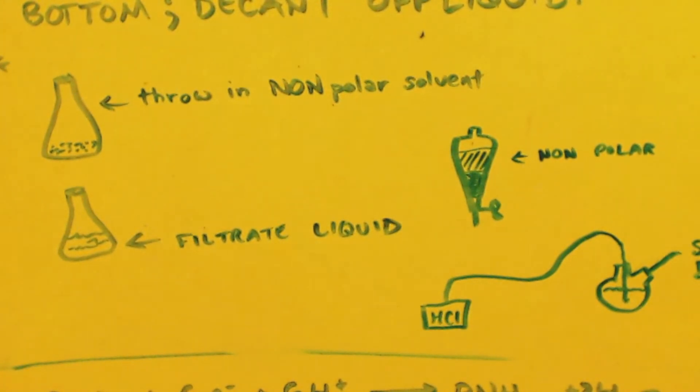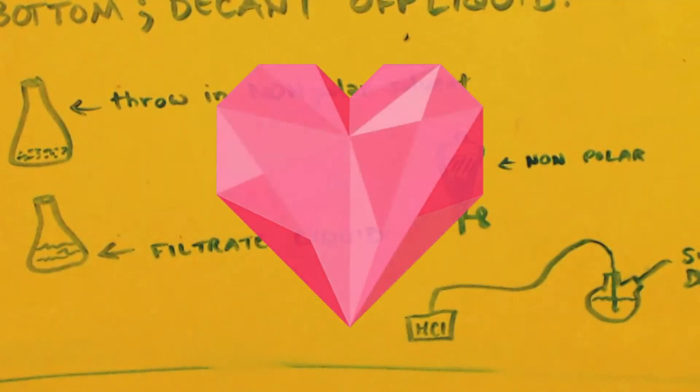Now the water, put back into the sep funnel and add five milliliters of your non-polar solvent you chose. Shake it up, vent, let it sit for 15-20 minutes. And then drain out the water and save it. Drain out the five milliliters of your non-polar solvent and put it with your mother liquor. And throw the water back in there. Repeat that process like five times. Get all the methylamine out.